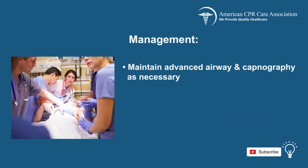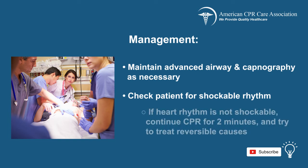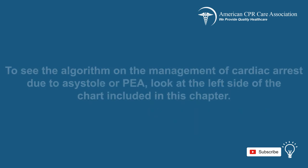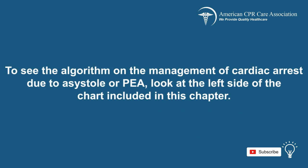Remember to maintain an advanced airway and capnography if needed. Pause and check the patient for a shockable rhythm. If the heart rhythm is not shockable, continue performing CPR for 2 minutes and try to determine and treat the reversible causes. To see the algorithm on the management of cardiac arrest due to asystole or PEA, look at the left side of the chart included in this chapter.